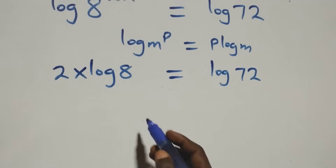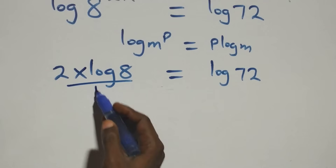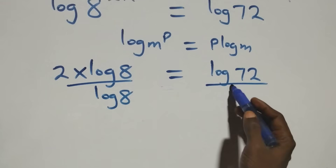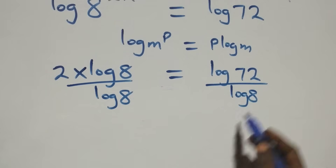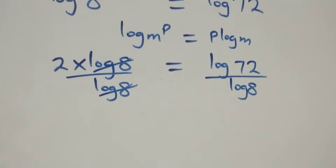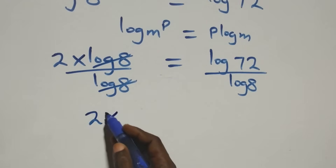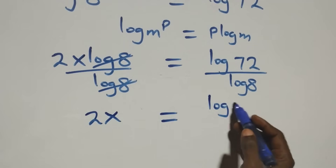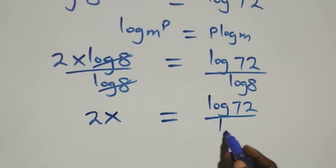The next step: we divide both sides by log 8. The log 8 on the left cancels, leaving 2x equals log 72 over log 8.